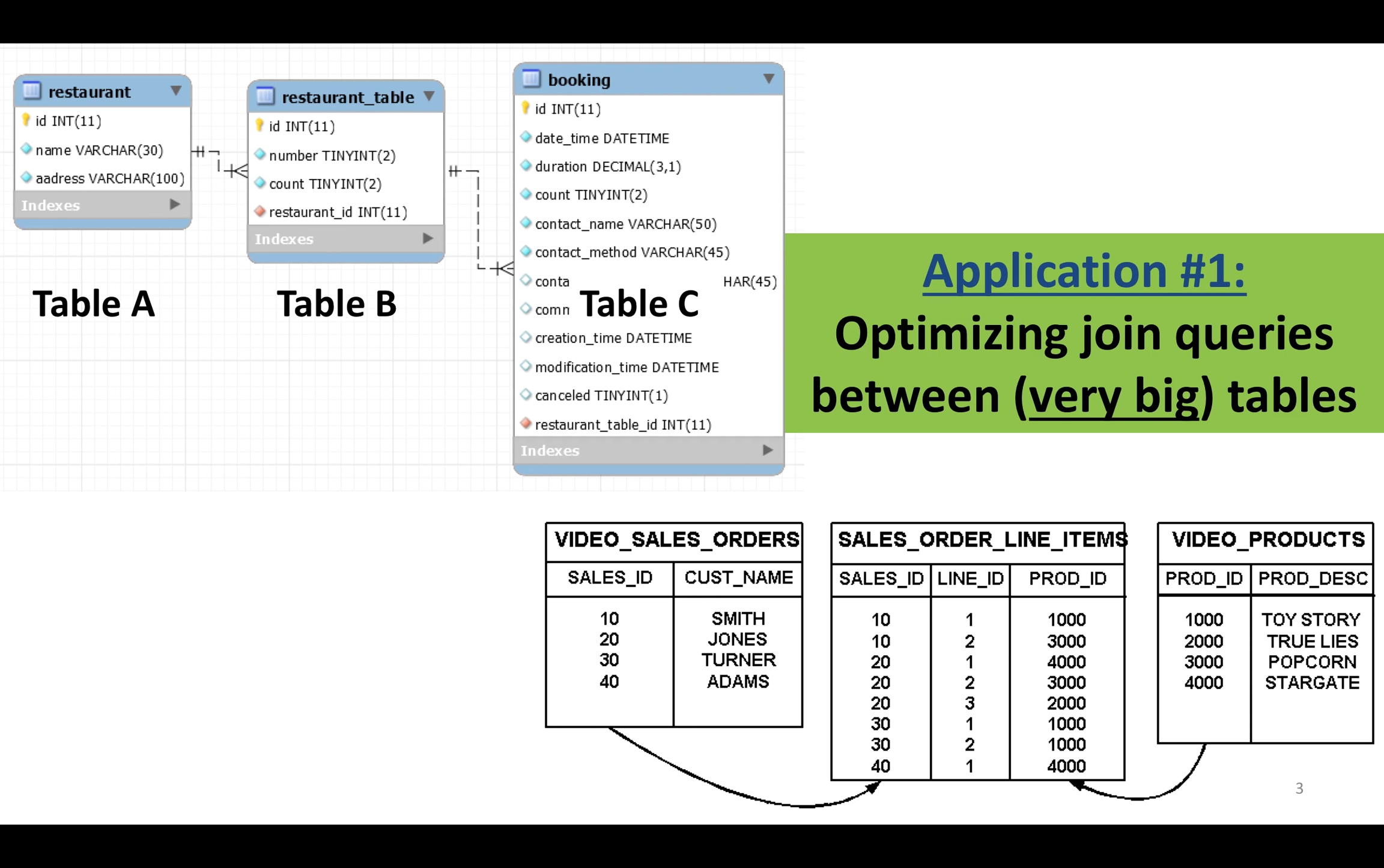For example, optimizing join queries between very big tables. Should we first join tables A and B, or maybe joining tables B and C first is more efficient?